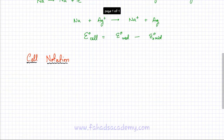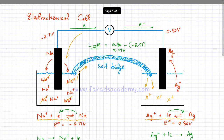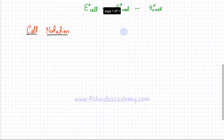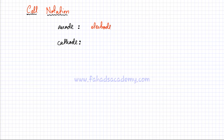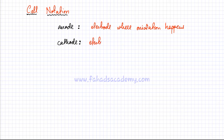Now I'm going to explain how to write the cell notation for an electrochemical cell. The cell notation is a shorthand representation of the entire electrochemical cell that we just drew, where we drew the cell and wrote down the equations occurring at anode and cathode. Starting with the basics — we need to first define what an anode is and what a cathode is. An anode is the electrode where oxidation is occurring. And similarly, a cathode is the electrode where reduction happens.